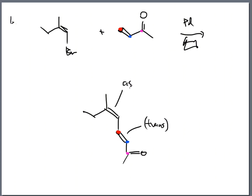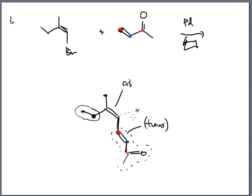Even though this double bond is cis — here's how I know. Here's a carbon, there's a carbon — it's a tie. Here's a carbon, that one runs out, so over on this side there's an invisible bond up to the hydrogen. Carbon beats hydrogen based on atomic numbers. So those high-priority groups are on the same side: that's cis. Then this new one is trans — my high group is pointed up here and the high group is pointed down here.